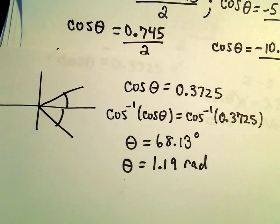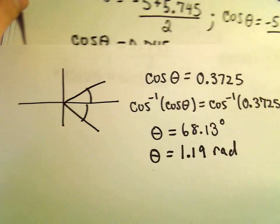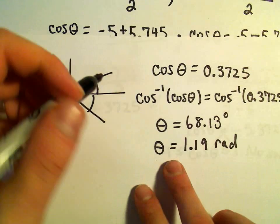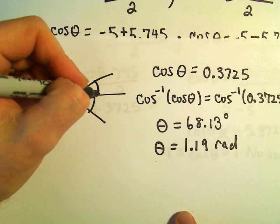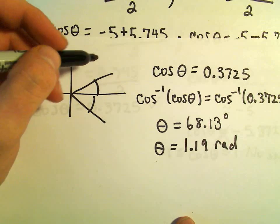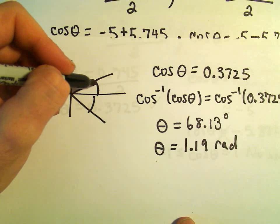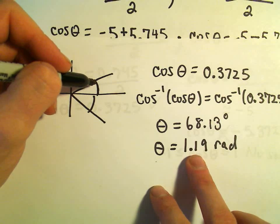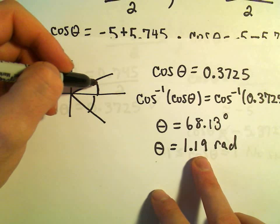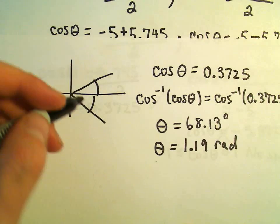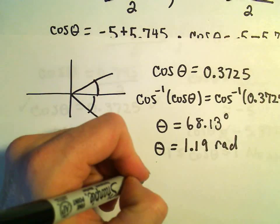So that's one of our solutions. And what we're finding in that case is we're finding the angle in the first quadrant that works. So 68.13 degrees or 1.19 radians also would work equivalently.